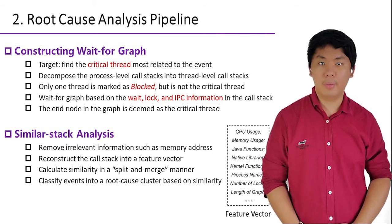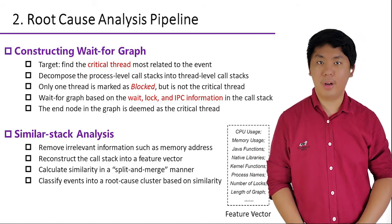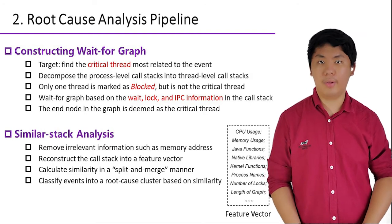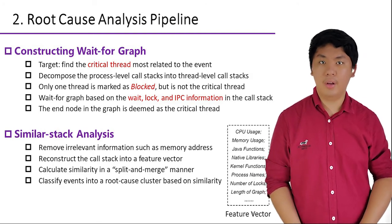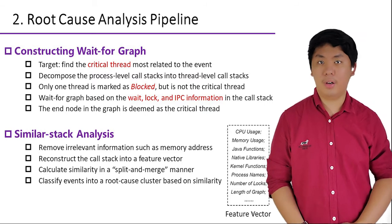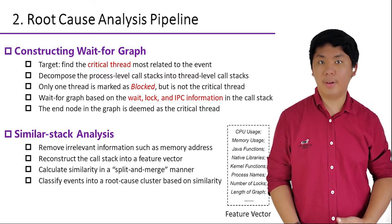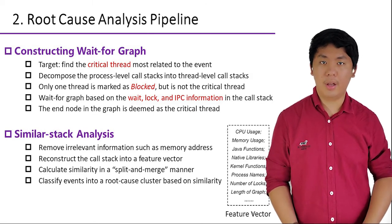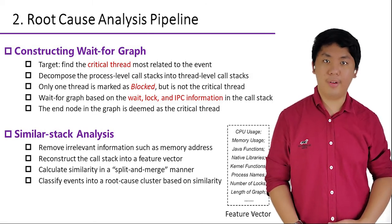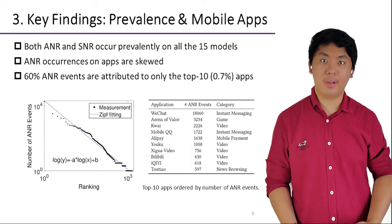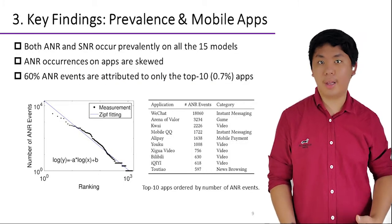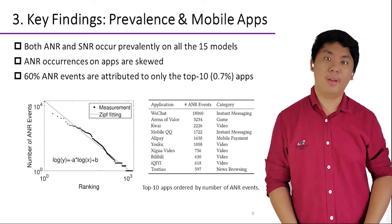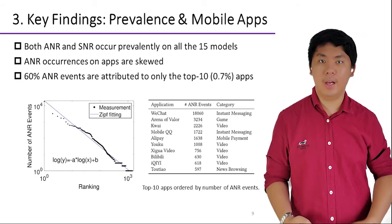Having found the critical thread, we remove irrelevant information such as memory address and thread ID from the core stacks, and reconstruct the remainder into a feature vector to calculate similarity in a split-and-merge manner. Events with high similarity in their feature vectors are considered to share the same root cause and can be analyzed together to relieve labor analysis work.